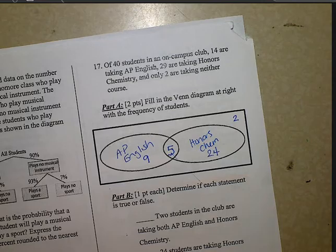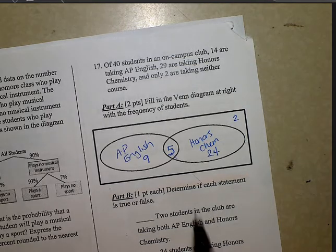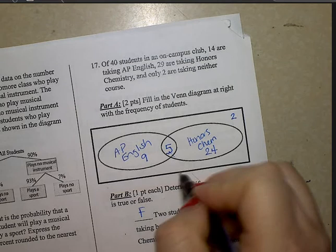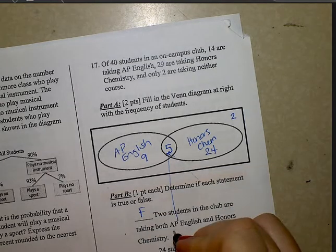Two students in the club are taking both AP English and Honors Chemistry. Not 2, false. Actually, how many are there? There are a total of 5. So there'll be 5 students. False statement.